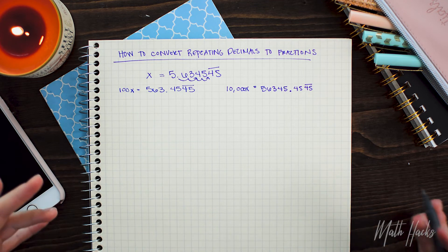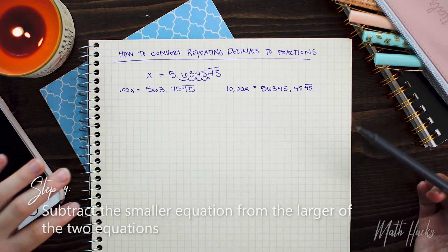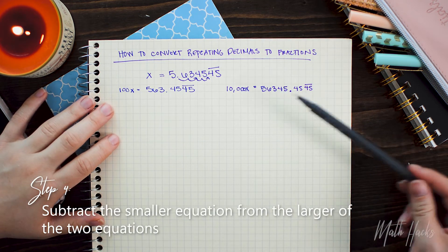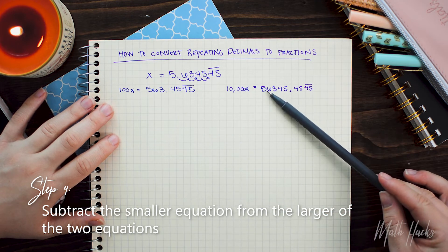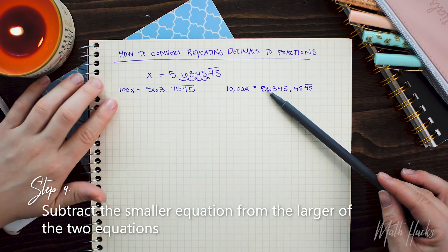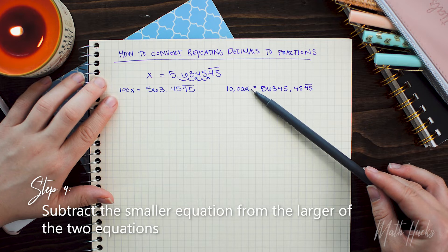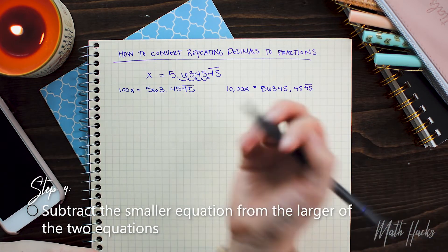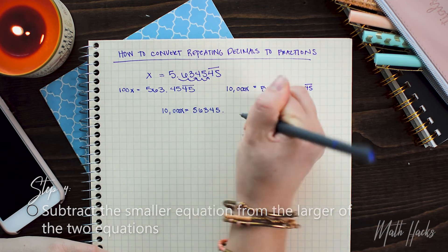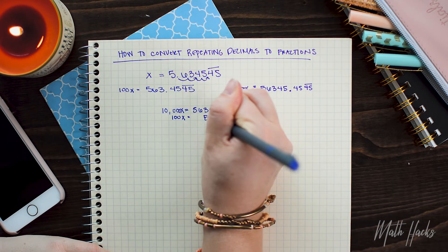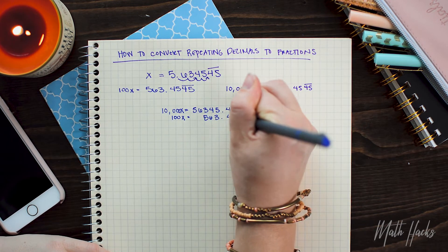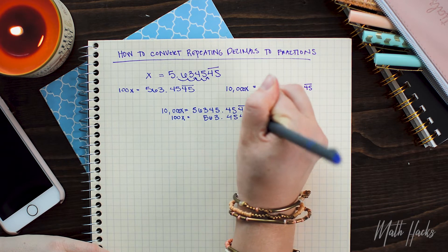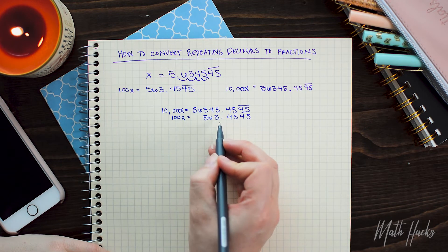Now believe it or not, we're almost there. Here, the next step is to subtract the smaller equation from the larger equation. So because this one's 100x and this is 10,000x, I'm going to subtract the left equation from the right equation. I'm just going to make sure that I am lining up the decimal places here to make it easy to subtract.